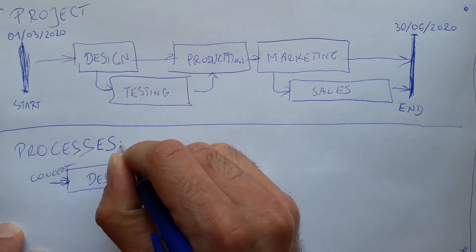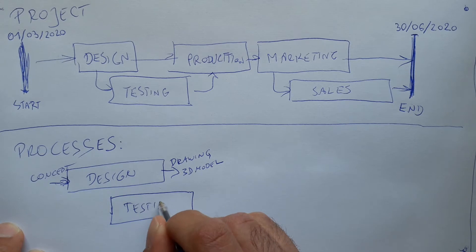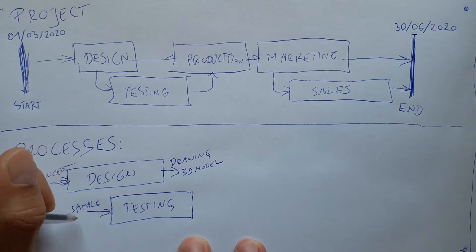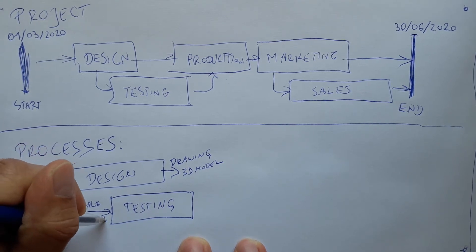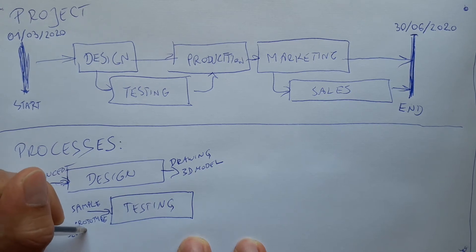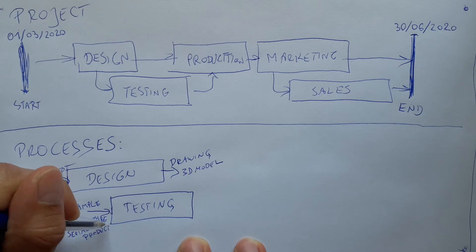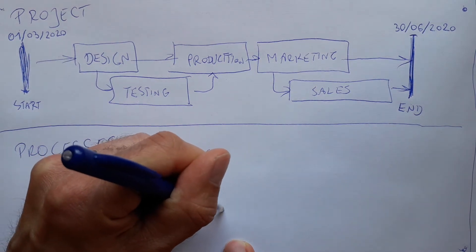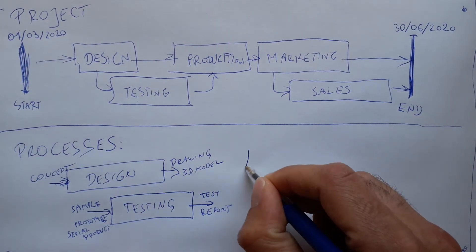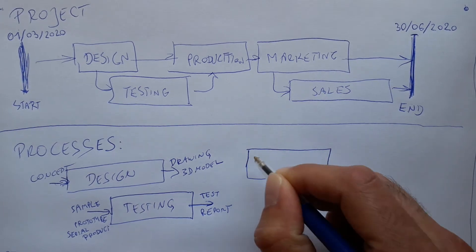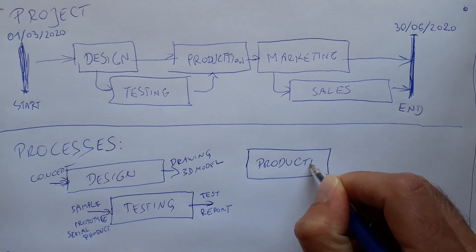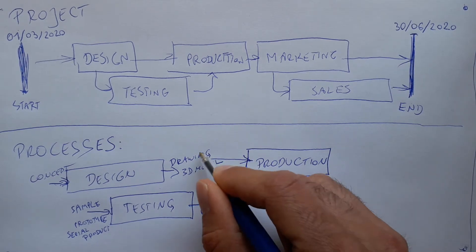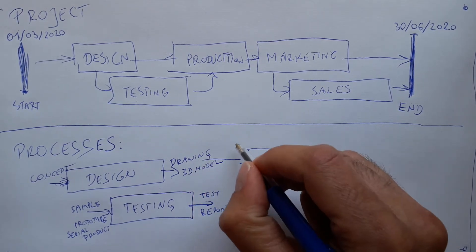Then for example we have the process of testing. I will see here: process is testing. As an input it can have a sample, prototype, or serial product. And after the testing, the output would be for example test report.